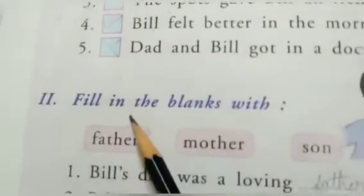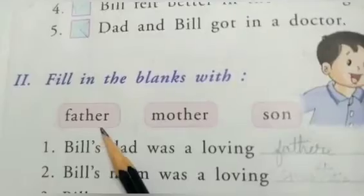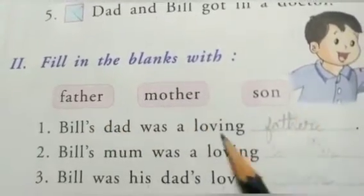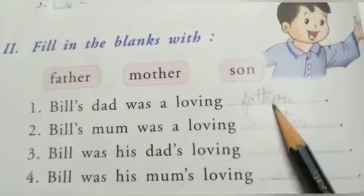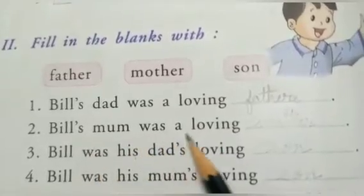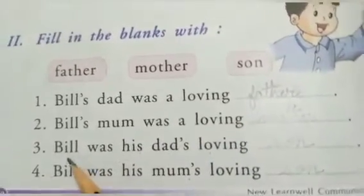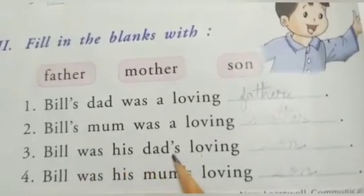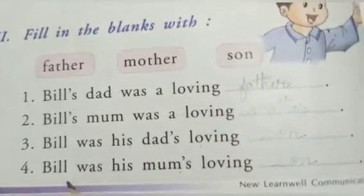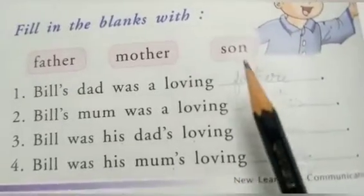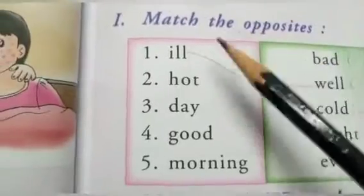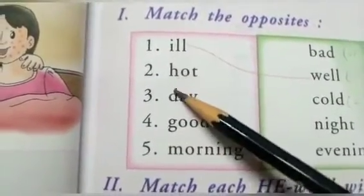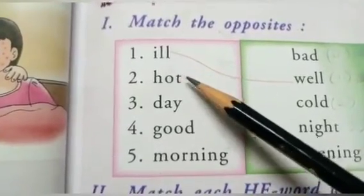Next one: fill in the blanks. Some words are given here — father, mother, son. Number one is done here. Bill's dad was a loving father. Bill's mom was a loving mother. Bill was his dad's loving son. Bill was